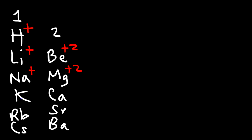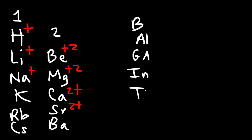Elements in group one have one valence electron; elements in group two contain two valence electrons. When they give those two valence electrons away, they form ions with a positive two charge — sometimes written as 2+ instead of positive two. Towards the right in group 13, also called group 3A, you have boron, aluminum, gallium, indium, and thallium. Elements like aluminum, gallium, and indium can form positive three charges.